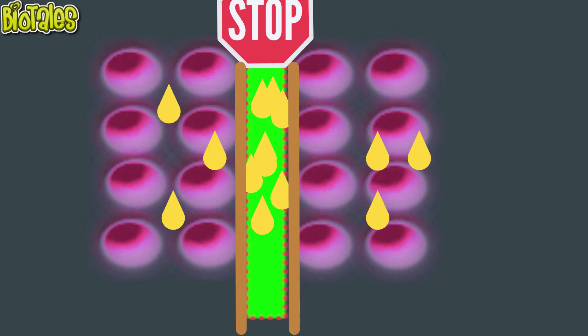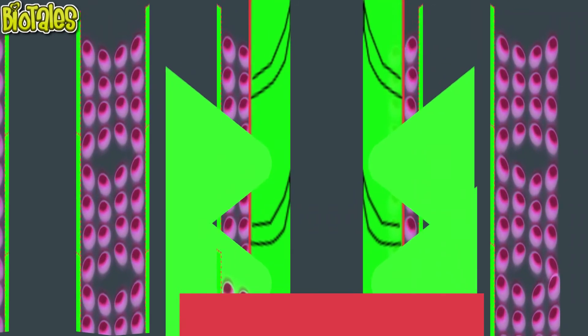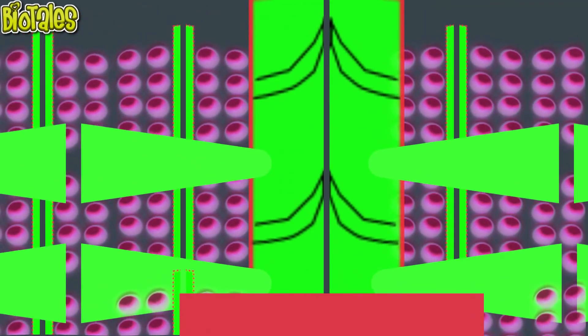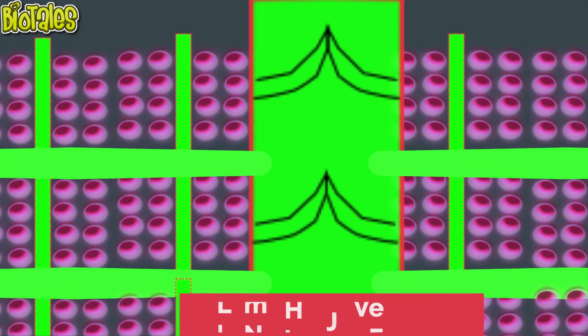When this fluid is present inside lymphatic capillaries, it is called lymph. These small lymphatic capillaries then converge and form large lymphatic vessels.